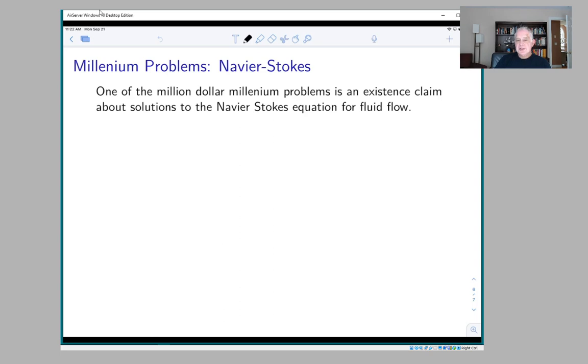It's a partial differential equation that governs fluid flow. You have to prove under general conditions that this equation always has solutions. It's unsolved and it's worth a million dollars. I include this as an example to show you that the problem of proving the existence of things can be a very profound one.